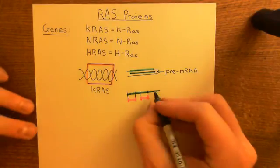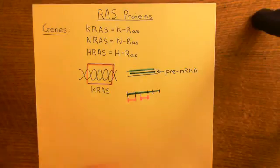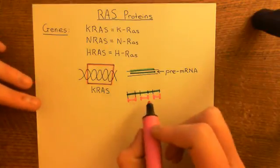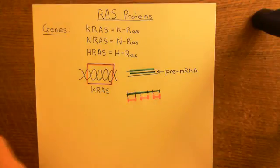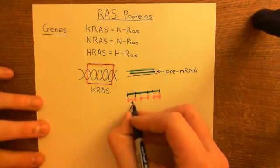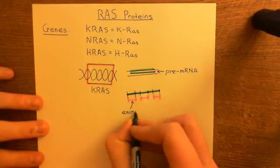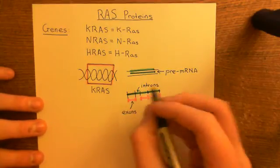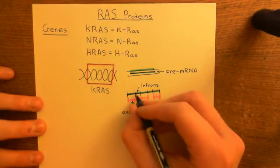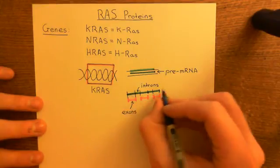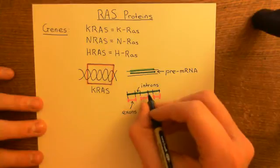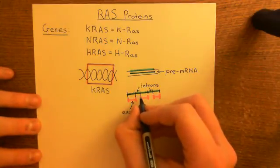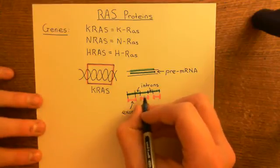Looking at the pre-mRNA, there are certain portions that actually need to be translated — let's highlight those. There are also portions that don't need to be translated. The portions that do need to be translated are called exons. The portions in between that are kind of like junk — they don't actually code for protein — these are called introns. So what's going to happen is you're going to cut out these introns from the piece of mRNA, and then glue the exons back together.